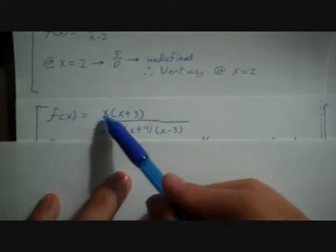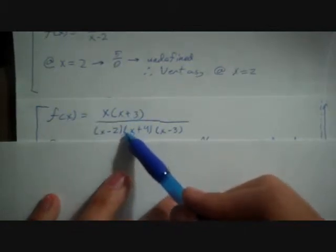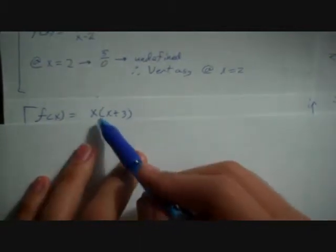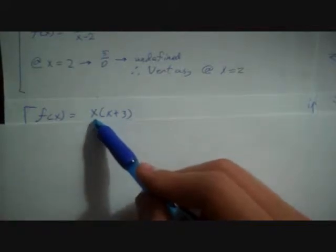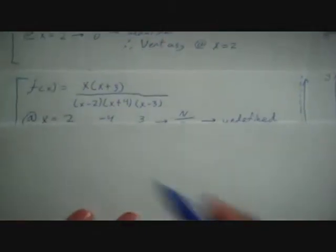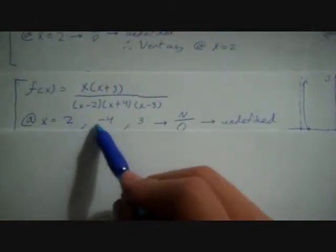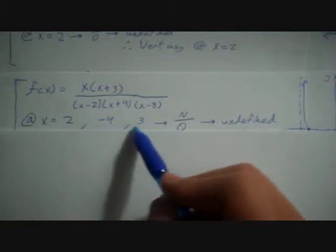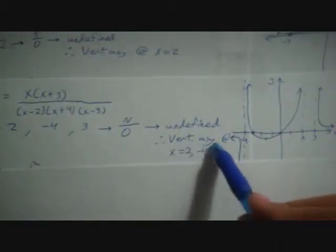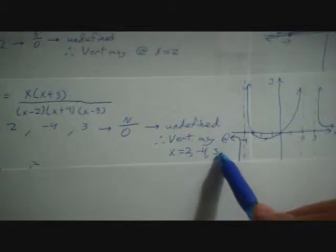Let's try a more complicated function: f of x equals x times (x plus 3) over (x minus 2) times (x plus 4) times (x minus 3). Our numerator has zeros at x equals 0 and x equals negative 3. Our denominator equals zero at x equals 2, negative 4, and 3, so at any of these values we have some number over 0, which is undefined. That means we have vertical asymptotes at x equals 2, negative 4, and 3.